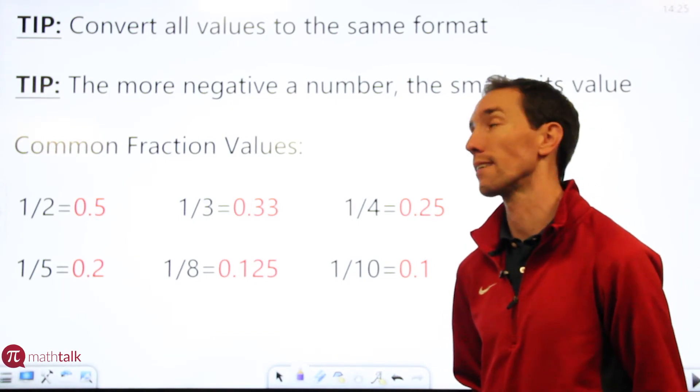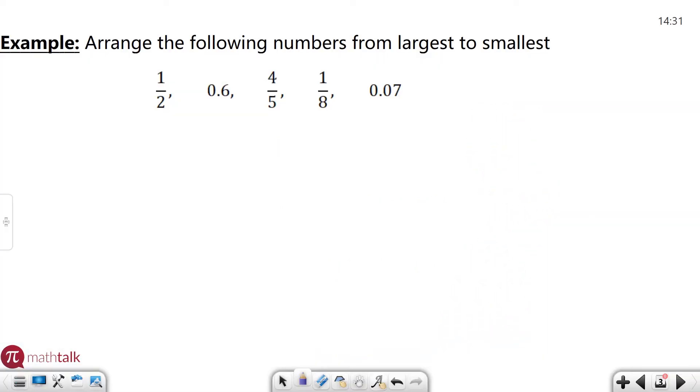Let's take a look at an example. Arrange the following numbers from largest to smallest, and you have some fractions and some decimals. The first thing I'm going to do is convert all of these to decimals because I like to look at them like that.